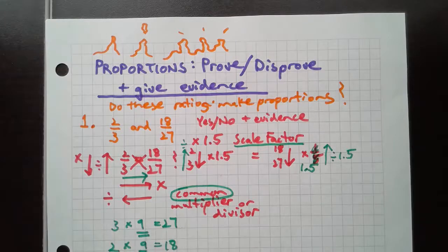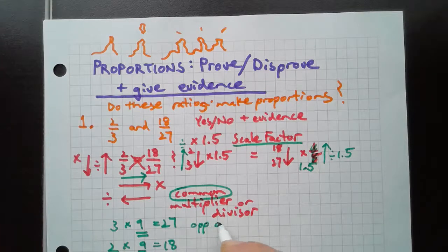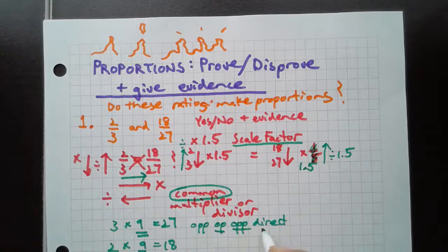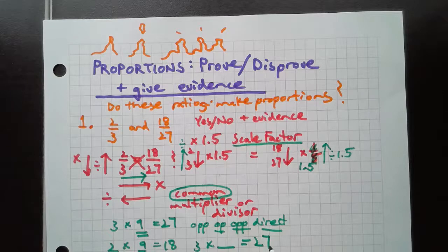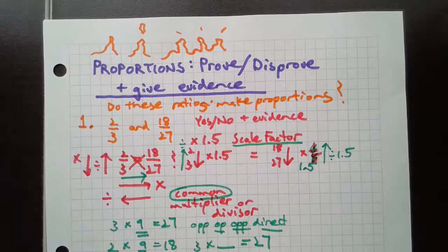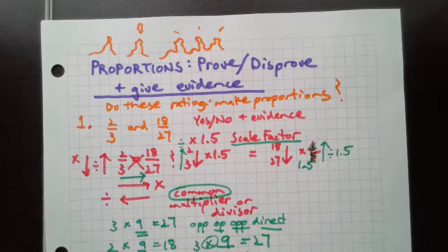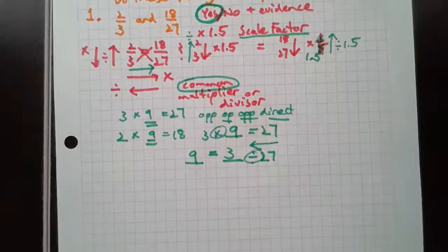Let's say we had some big, ugly numbers here and we did not know this was 9. How could we do it? We go opposite direction, opposite operation. If we don't know what 3 times box is to get 27, then we go 27 divided by 3 equals 9. So this was a yes. Look at all that evidence we have.